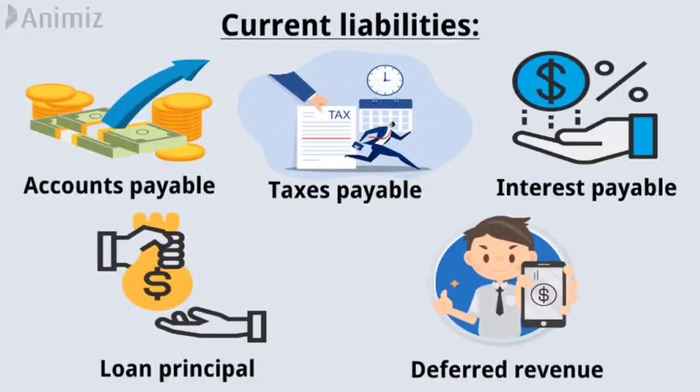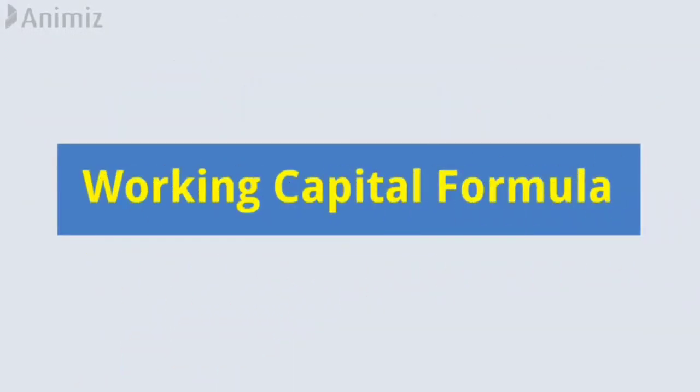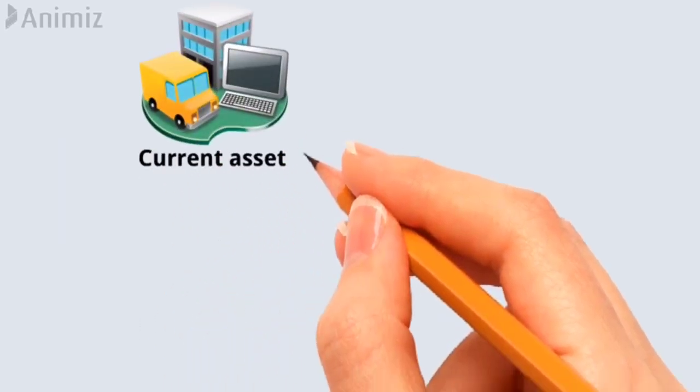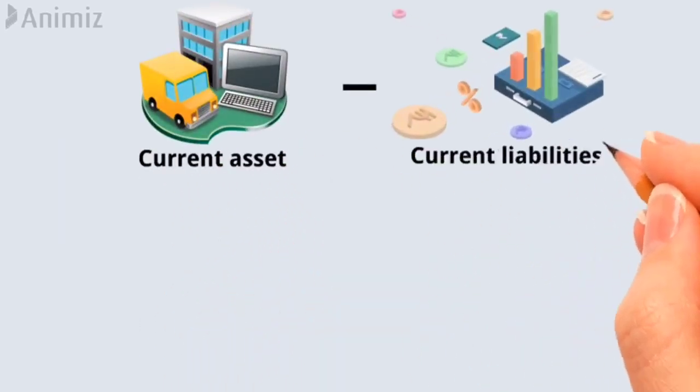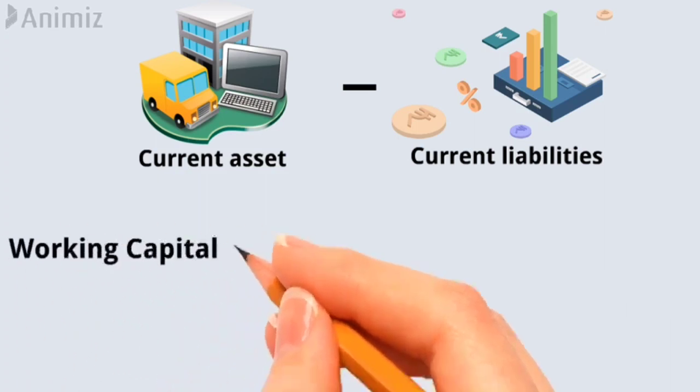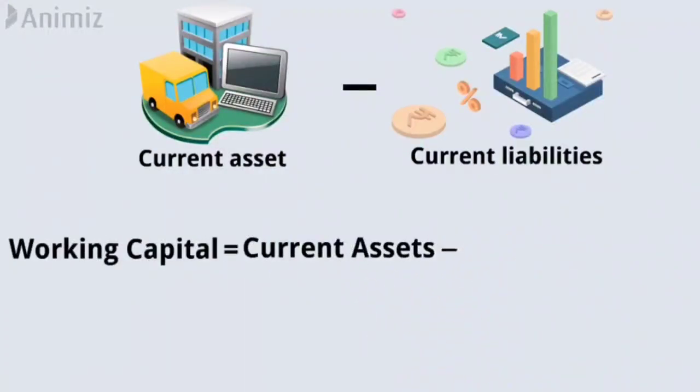Working capital formula: To calculate working capital, subtract a company's current liabilities from its current assets. This means working capital equals current assets minus current liabilities.